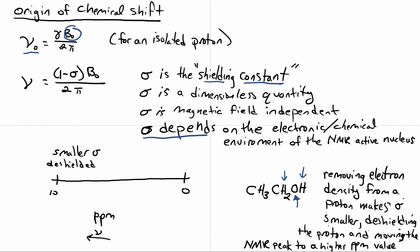So this deshields the protons, removing electron density, and moves the NMR peak to higher ppm. So that's why we expect these protons here on the OH group and the CH2 to be at higher ppm than, say, this methyl group protons. So we say the smaller sigma, because removing electron density decreases sigma's value, deshields it and moves the peak to higher ppm or higher frequency.